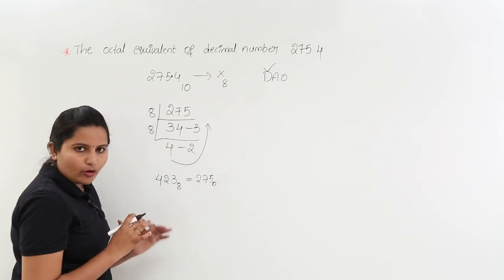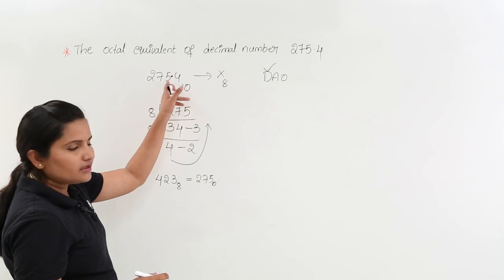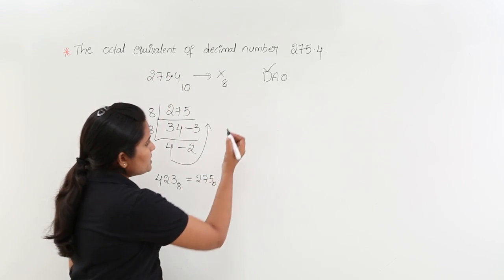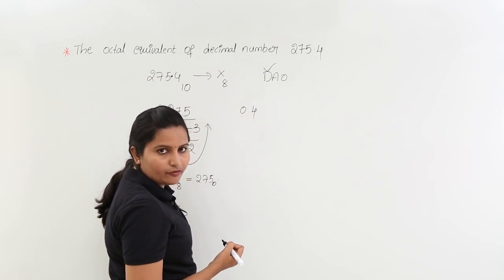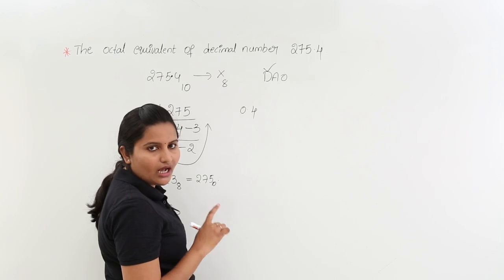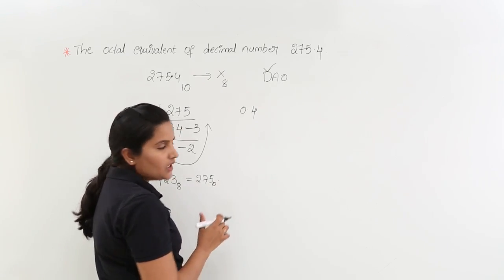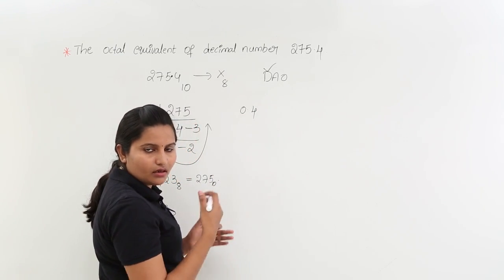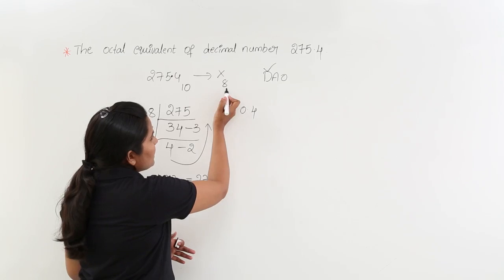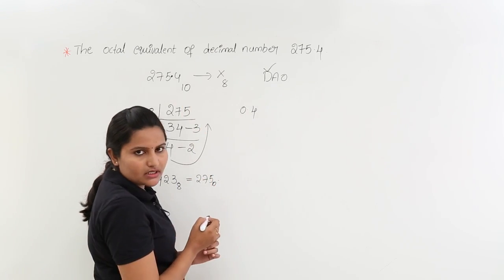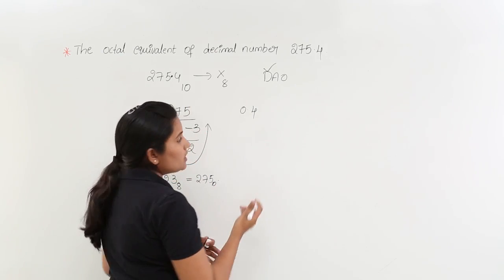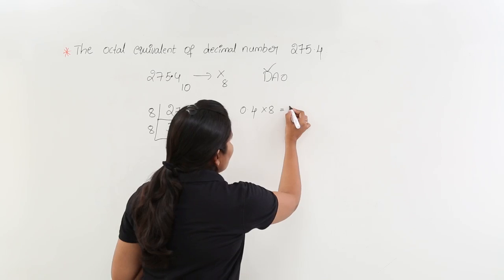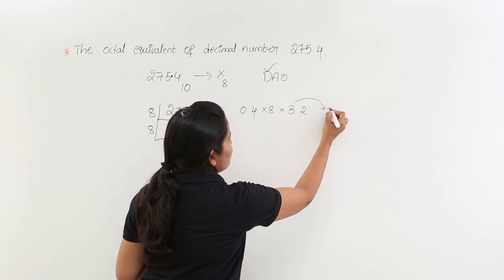The problem is not yet complete. We need to find the octal equivalent for the decimal point digit. Whatever digit is after the decimal point — that is 0.4 — we need to find its octal equivalent and then add it to the result. For 0.4, we multiply by the destination number system: 0.4 times 8 equals 3.2, so we take out 3.